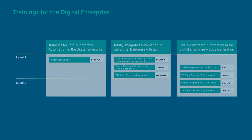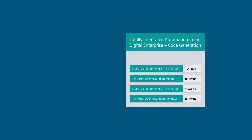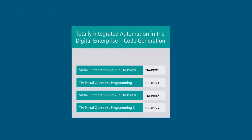As part of our training courses for the Digital Enterprise Learning Path, the C-Train courses TIA Portal Openness Programming 1 and 2 offer you the knowledge necessary for you to program and operate your system with even more efficiency and flexibility.